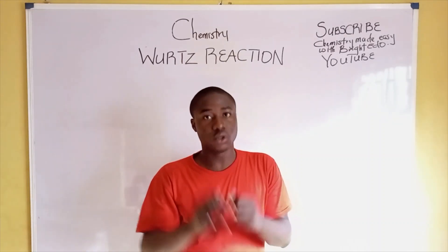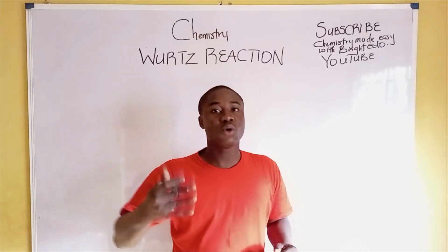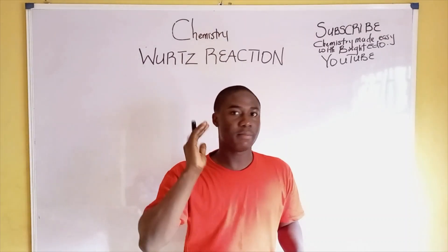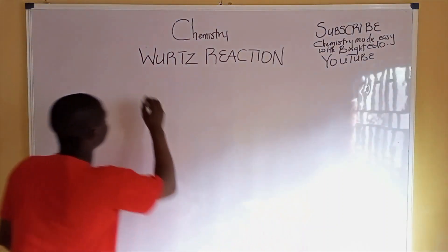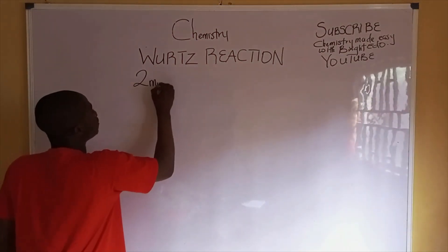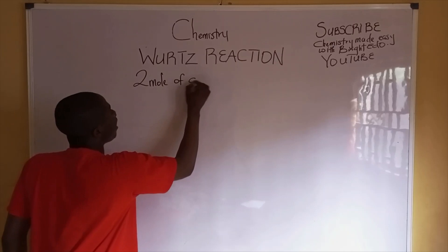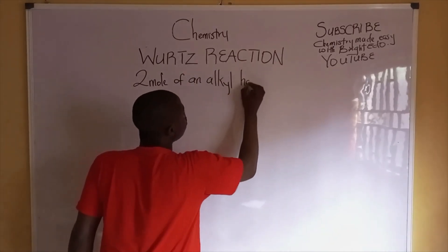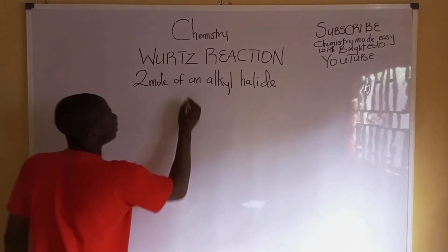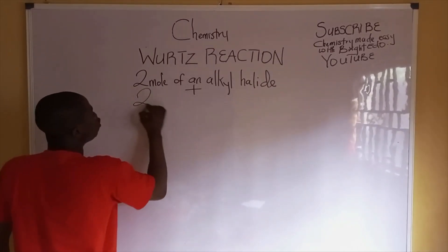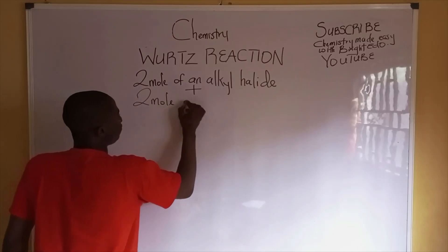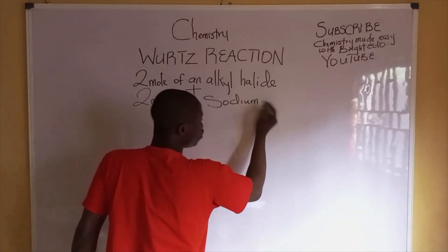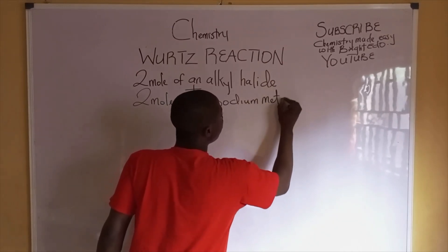How does the Wurtz reaction work? The Wurtz reaction works by reacting two moles of an alkyl halide with two moles of sodium metal.